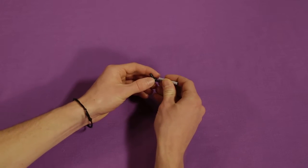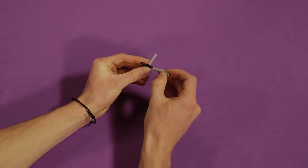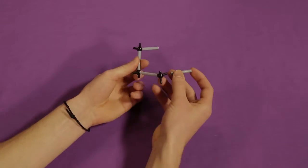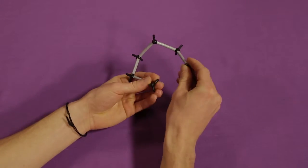Start by connecting the sp3 hybridized carbon atoms in a ring. This ring will have a three-dimensional structure and will not be able to lay flat on the table.